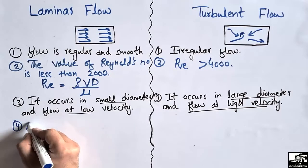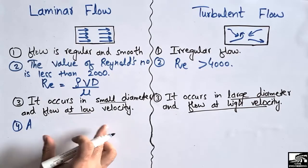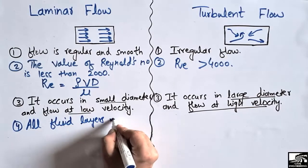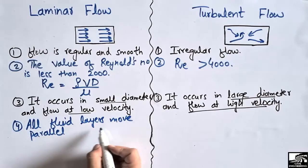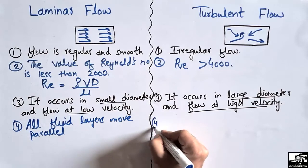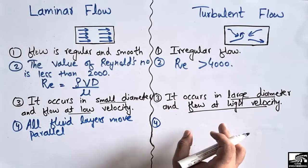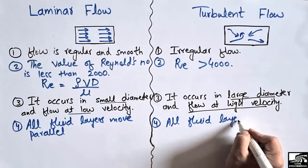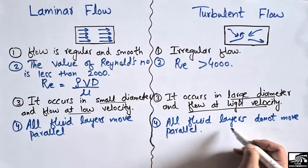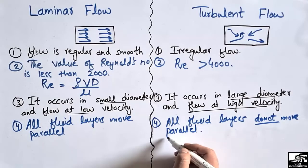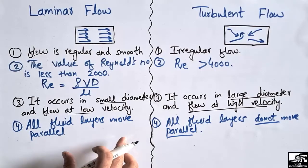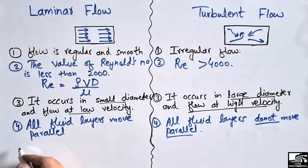The fourth characteristic is that all the fluid layers of laminar flow move parallel to each other. In the case of turbulent flow, the fluid layers do not move parallel but cross each other.